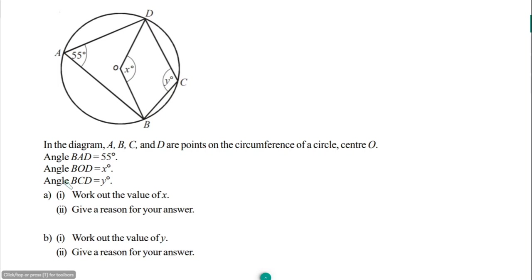Here we have a diagram with points A, B, C and D on the circumference of a circle with center O. Angle BAD is 55 degrees and angle BOD is x degrees, and angle BCD is y degrees. In the first part we need to find the value of x. To find angle x, we consider that the angle at the center has to be twice the angle at the circumference, so if here is 55 degrees at the circumference, the angle at the center has to be twice of it.